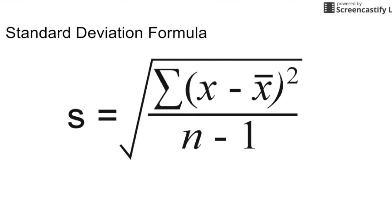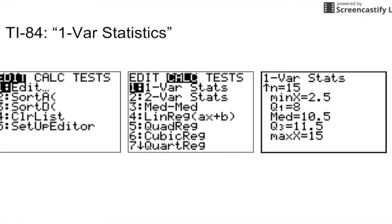If the standard deviation were 0, that would mean that there is no variation in the data set. Both standard deviation and variance can be found with 1-var stats, but the formula for standard deviation is on the AP statistics formula sheet anyways.